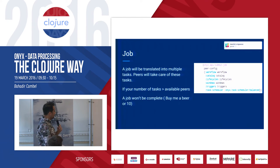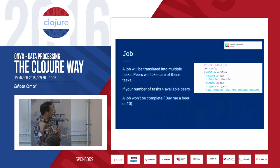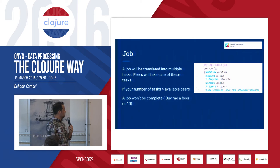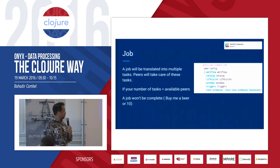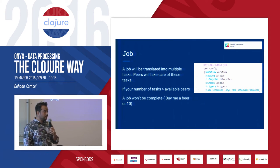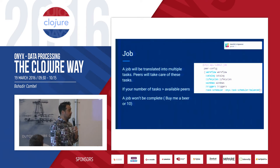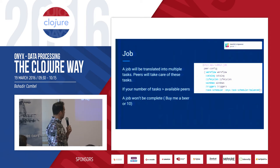A job consists of all the things I mentioned: you define your workflow, catalog, lifecycles, windows, and triggers, and you give it one of the task schedulers — in this case a balanced scheduler — and submit your job. Please be careful about how many peers are available on the cluster; if you don't have enough peers, your tasks won't start.